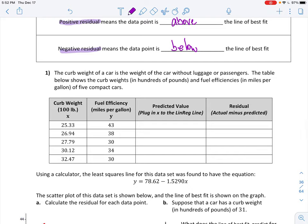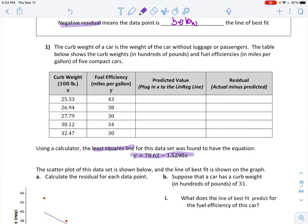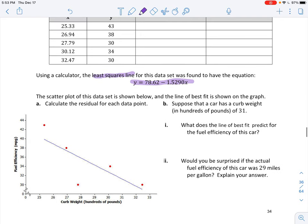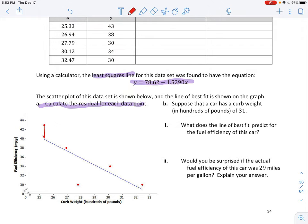A positive residual means that the data point is above the line of best fit. And a negative residual means that the data point is below the line of best fit. So here we're talking about the curb weight of a car, the weight of the car without luggage or passengers. The table below shows the curb weights and fuel efficiencies of five compact cars. So that means when I calculate this, I better have four positive numbers and one negative number.